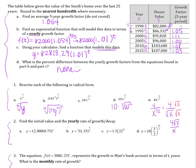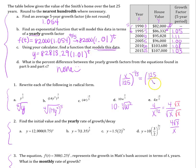If a fraction is raised to a negative exponent, flip the fraction and make the exponent positive. For example, x over 125 to the negative one-third becomes 125 over x to the positive one-third, which is the cube root of 125 over x.